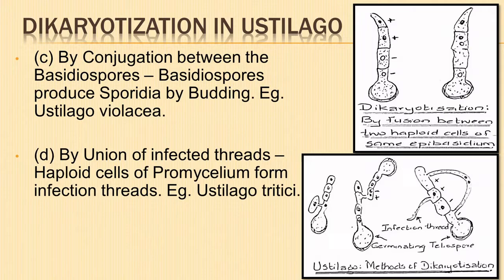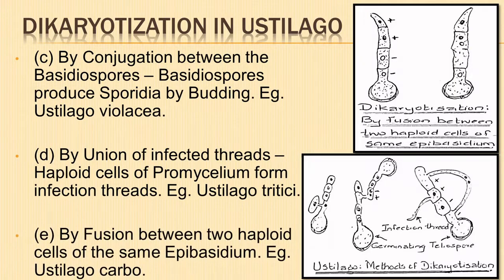Haploid cells of the promycelium grow into small slender hyphae known as infection threads. Two neighboring infection threads of opposite strains fuse; the nucleus of one passes into the other. The binucleate infection threads so formed grow into secondary mycelium, as seen in Eustilago tritici.